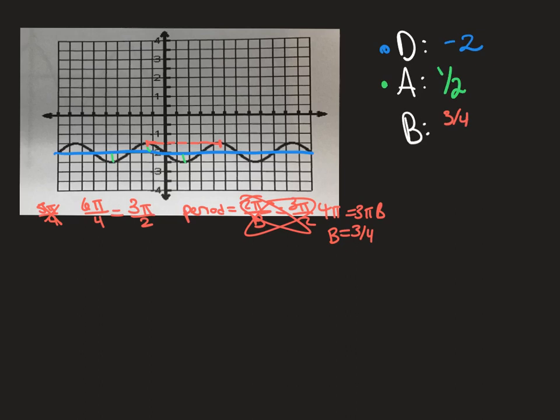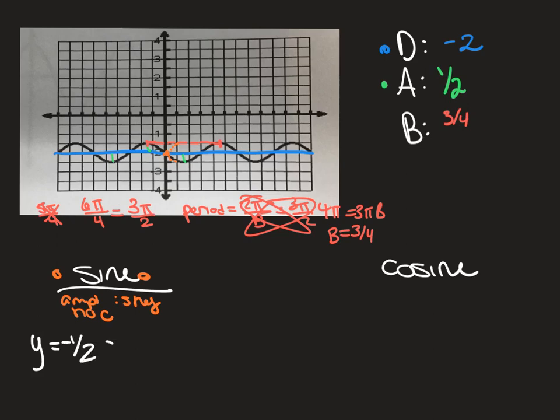And then you have to do your two separate trig equations. I'm going to do sine, and we'll do cosine. Keep sine orange. So on my y-axis, I have a middle point, which means sine is going to be easier, but sine is supposed to go up, and this one goes down. So that means my amplitude is negative, but no C value. So my equation for sine is going to be y equals 1 half, but it said make my amplitude negative, so put a negative in front of your 1 half. So sine, 3 fourths, x minus 2.